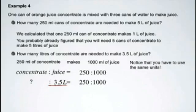But there's a problem. We have to use the same units. 250 milliliters of concentrate and 1,000 milliliters of juice. They're all the same. But if I come over to the 3.5 liters, I have a problem. It's not in milliliters. And when you're setting up a proportion, we need to use the same units.